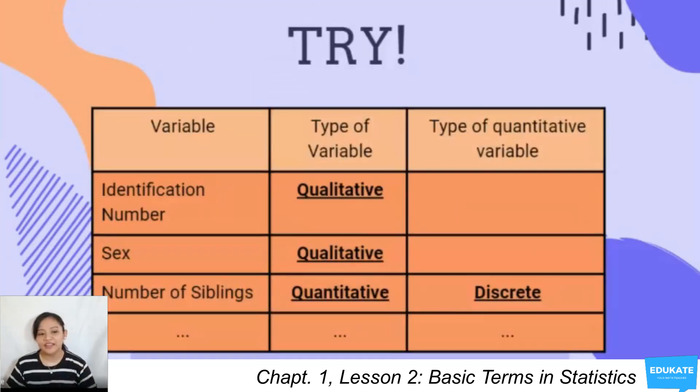So why don't you try? I have here a table. We have here the first column being variable, the second one being the type of variable, and then the third column being the type of quantitative variable. For example, you have your identification number. Now we know that is under qualitative. So we write in the second column, qualitative. For the third column, it's qualitative. So why do we need to write the type of quantitative variable? So leave it blank.